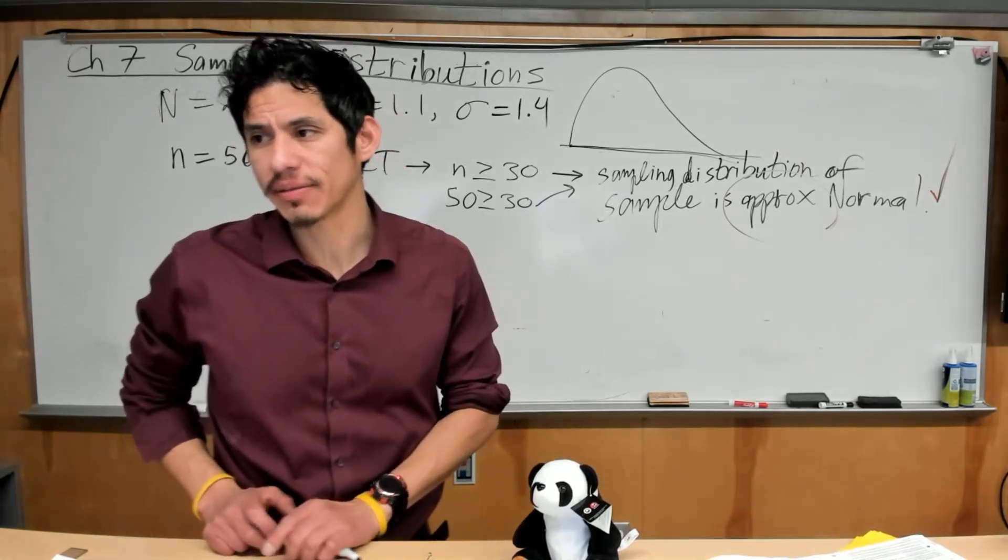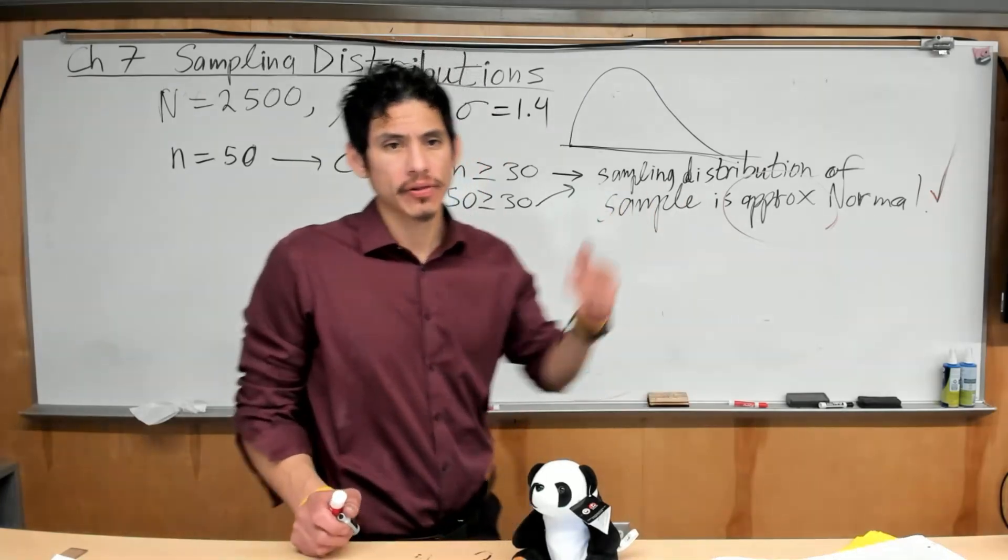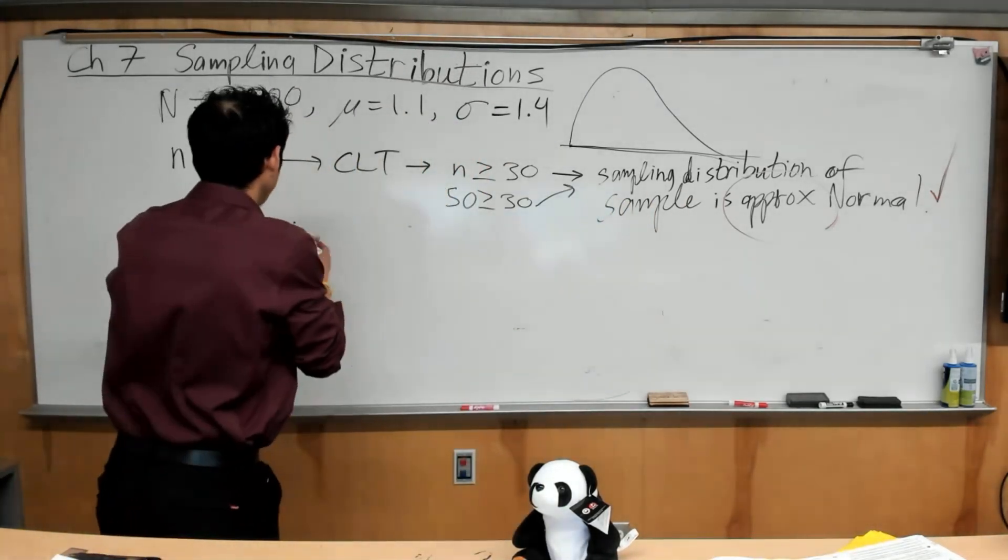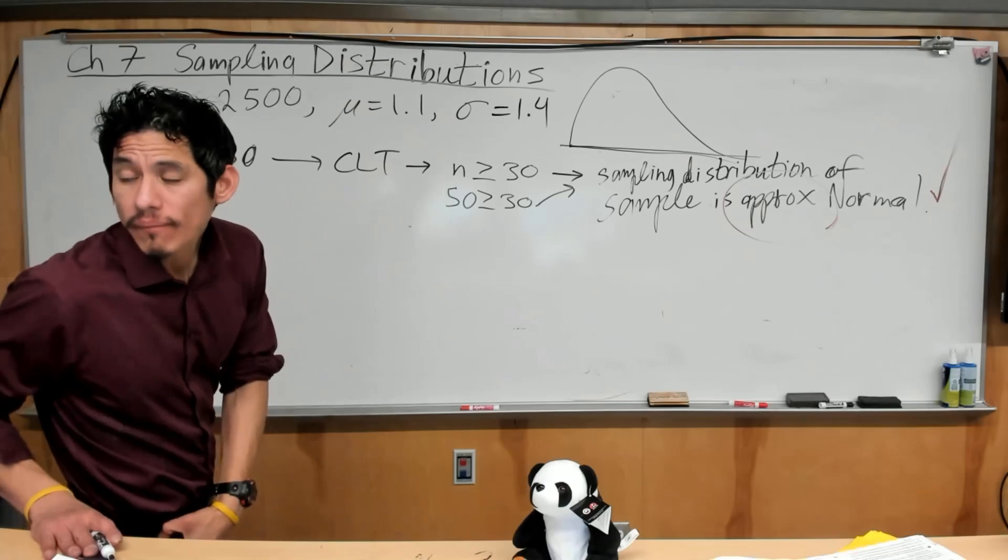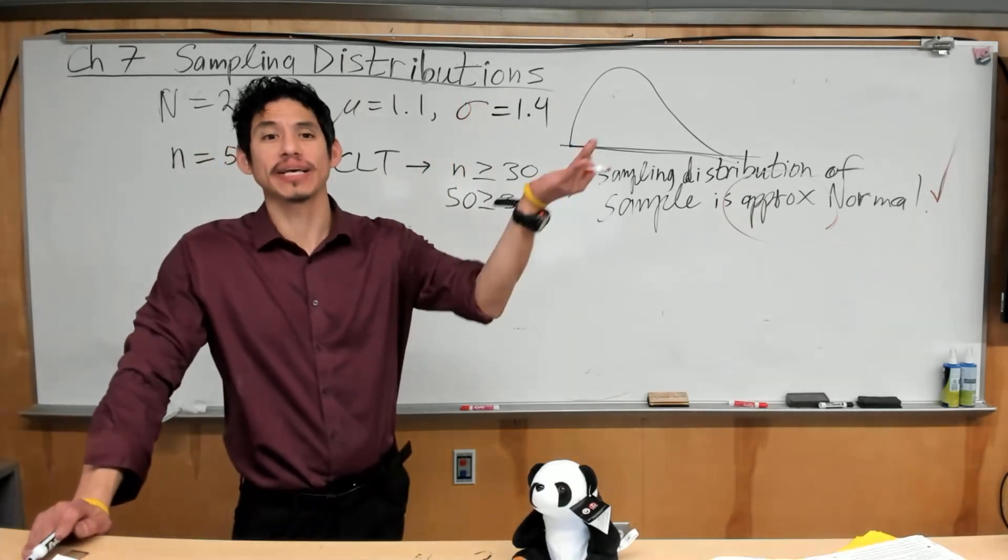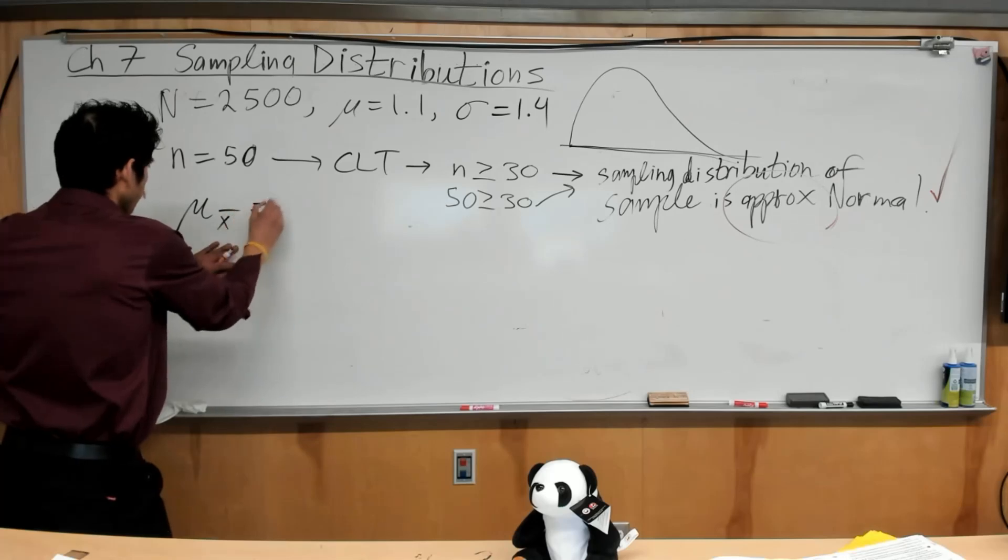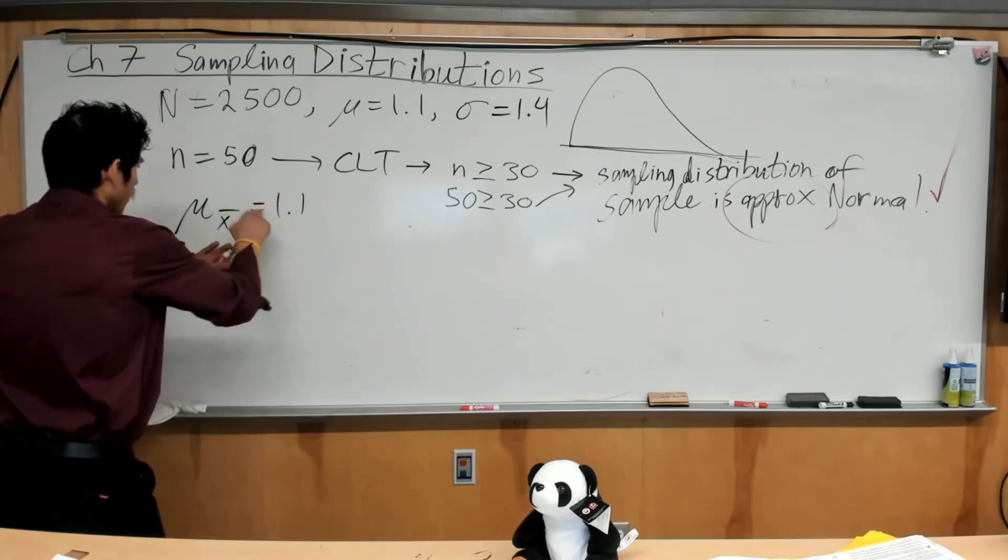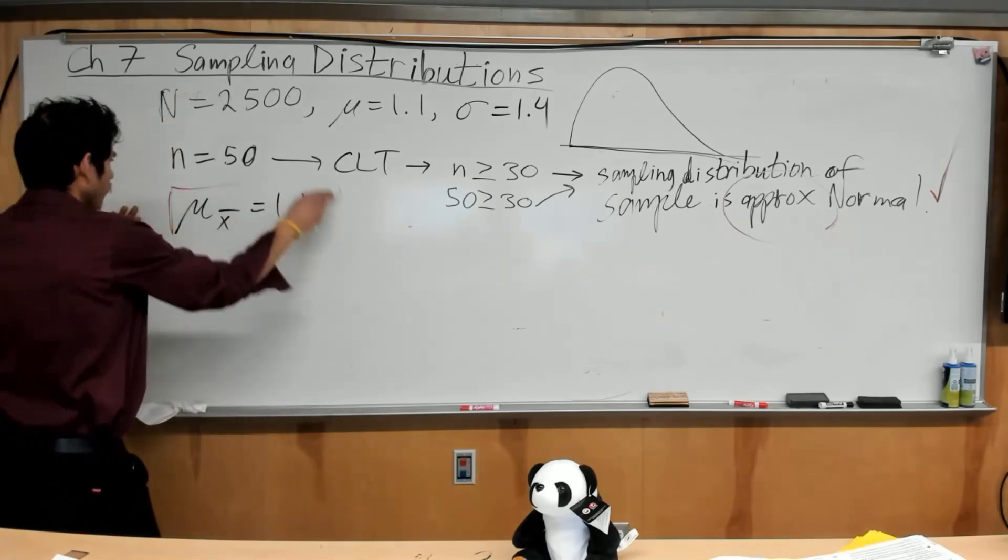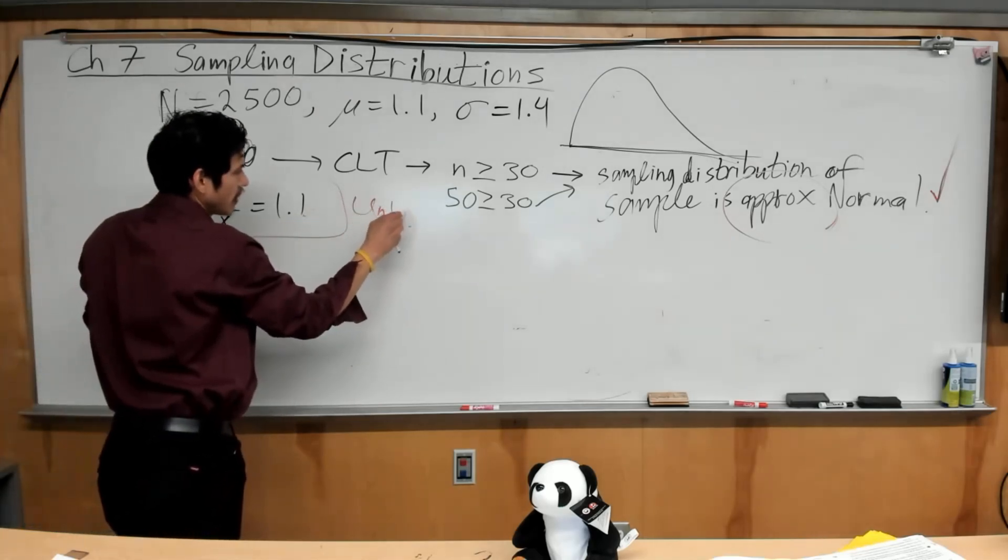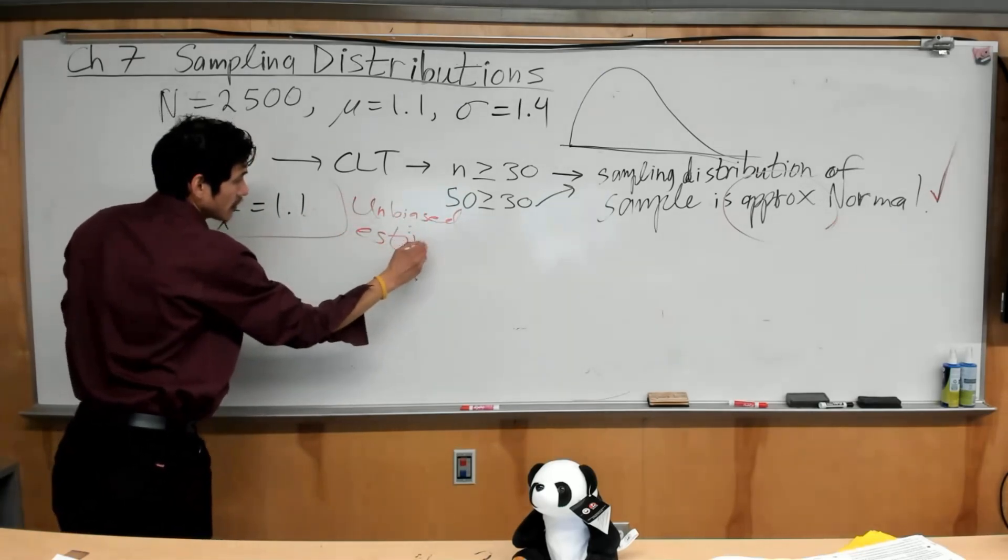Okay, part B. What are the mean and standard deviation of the sampling distribution of the sample mean? All right, so we just use this calculation formula. Now, the mean of a sample mean is an unbiased estimator. So the mean of the sampling distribution of x-bar, mu sub x-bar is going to be 1.1, unbiased estimator. I don't know if you have to write it, it doesn't say why, but it's an unbiased estimator. Let me just put it that way. Unbiased estimator, just in case.